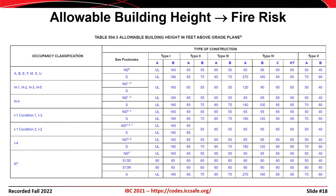Table 504.3 of the International Building Code provides the maximum height of buildings based on the occupancy classification and the type of construction used. In this table, NS means not sprinklered, S means sprinklered, and UL means unlimited. The height of the structure is important in this context because as the height increases, it takes longer for occupants to evacuate and it becomes more challenging for firefighters to extinguish the fire. As a result, buildings that are more flammable or that aren't required to have sprinkler systems are generally restricted to lower heights than buildings constructed of non-combustible materials or buildings that have active fire suppression systems.